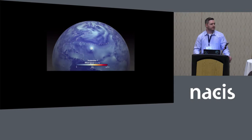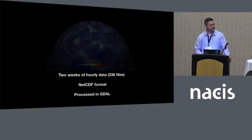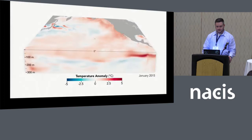We can also animate things like this. This map shows Hurricane Florence forming off the coast of Africa and then making its way over the Atlantic over a two-week period before it hit landfall in North Carolina. This was two weeks of hourly data, again from NetCDF format, and also processed in GDAL — no GUI tools whatsoever.